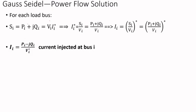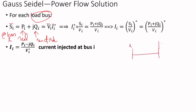For each load bus, we know that complex power S equals P plus jQ, where P is real power and Q is reactive power. These are complex numbers. The voltage at bus i, and if you think of bus i connected to bus k or j via a branch or line, the power injected at bus i follows this equation. Taking the conjugate, current I equals S divided by V.